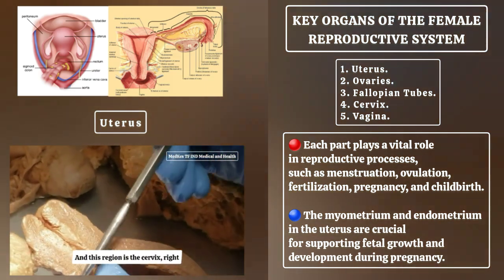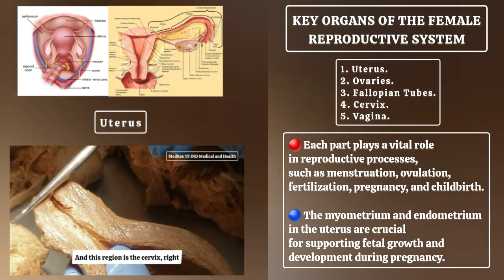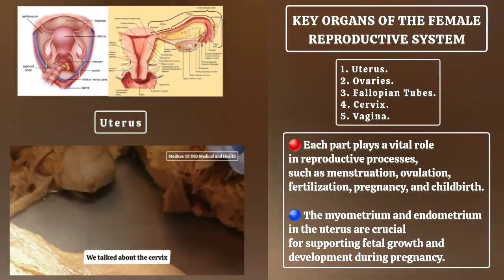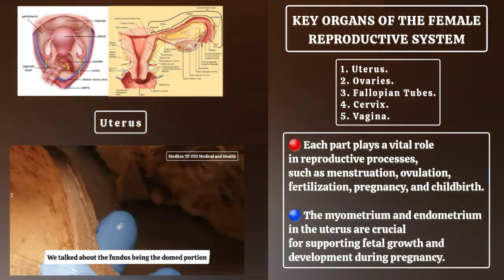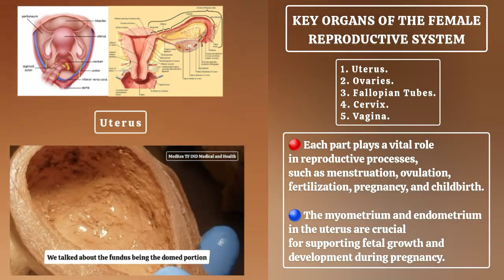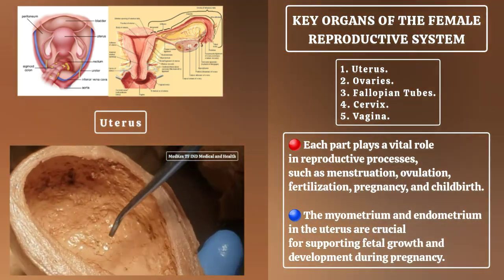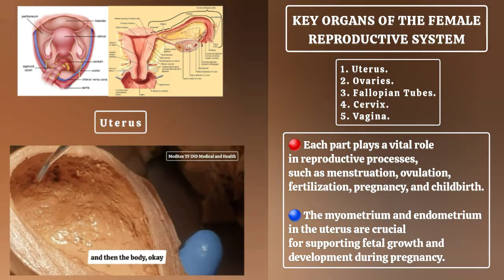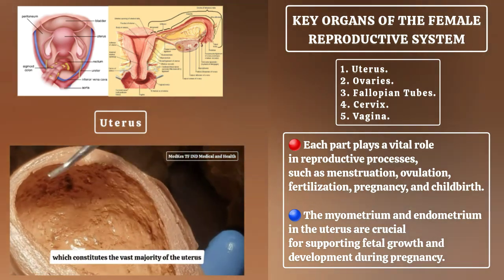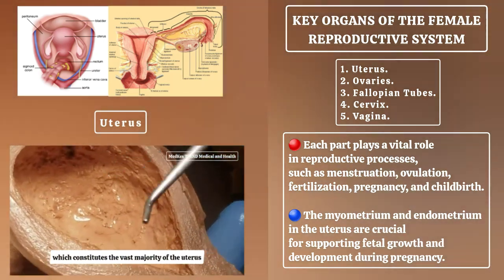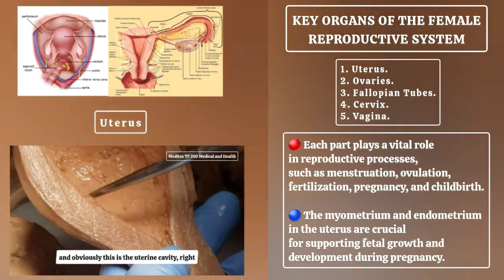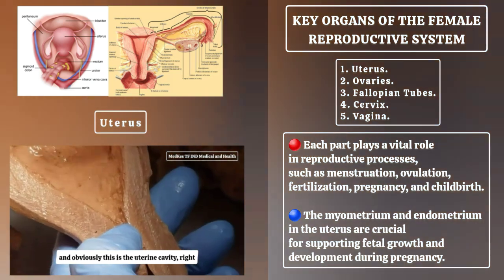This region is the cervix. We talked about the cervix, we talked about the fundus being the domed portion, and then the body, which constitutes the vast majority of the uterus. And obviously, this is the uterine cavity.